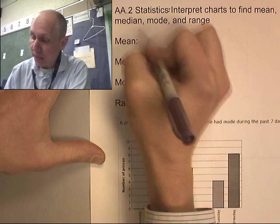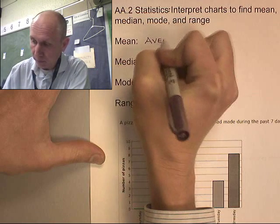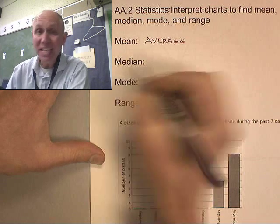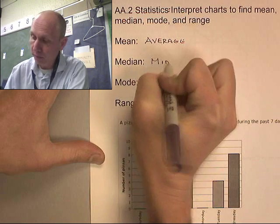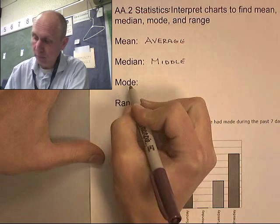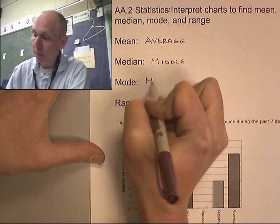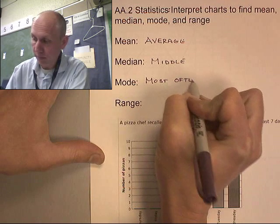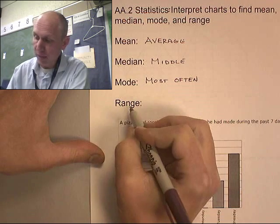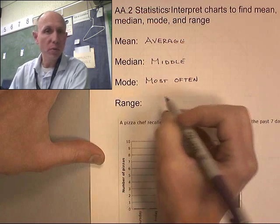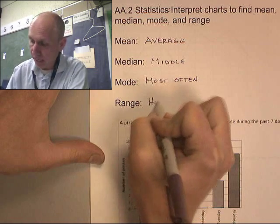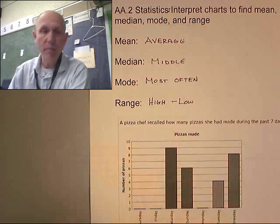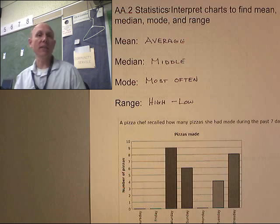Mean is a fancy word for average. Median is a fancy word for middle. Mode is the number that appears most often. And the range is the numbers between low to high — so it's actually the highest value minus low. That's how many numbers are in between the highest value and the lowest value.